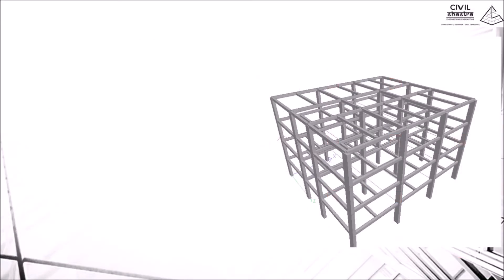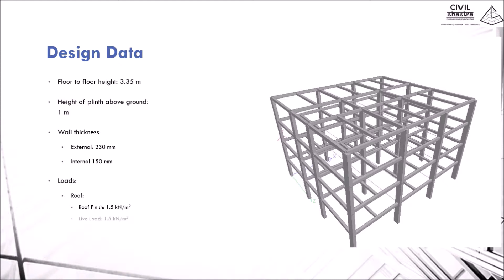Now this is the frame that we'll be designing. This building is a ground plus three-story structure with RCC frame. The columns and beams are marked. The design data for this problem is: floor to floor height is 3.35 meters, height of plinth above ground level is 1 meter, wall thickness for external is 23 centimeters and for internal is 15 centimeters. These are standard wall thicknesses used generally in the industry. The loads for roof: roof finish of 1.5 kN/m² and live load as 1.5 kN/m². For floor: floor finish of 1 kN/m² and live load of 4 kN/m².